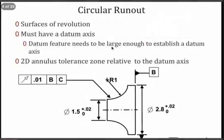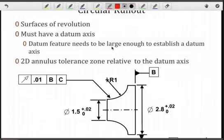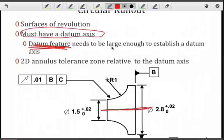So let's look at the 2D case first, the circular runout. Again, we're dealing with a surface of revolution. So in the example here, we've got an axis about which that 2D surface revolves, or that 2D cross-section revolves. We have to have a datum axis in order to relate it to other features. And the datum feature related to that axis should be large enough so that this axis can be easily established.